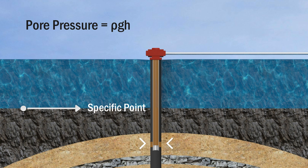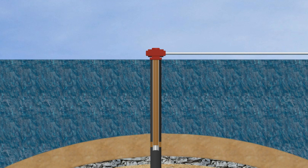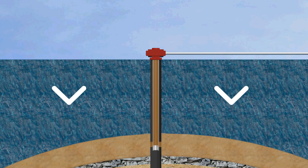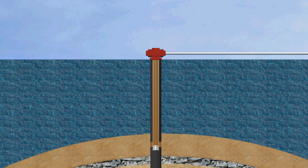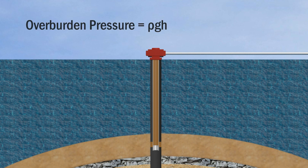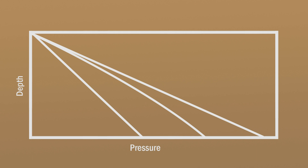Pore pressure represents the formation pressure — the actual pressure possessed by formation fluids by which they can flow upward to the surface. Overburden pressure is the pressure caused by both sediments (rock grains) and the column of formation fluid within their pores. Formation pressure may reach overburden pressure in abnormal cases, such as when sediments are still unconsolidated and cannot support their own weight. Overburden pressure equals ρgh, where ρ is the bulk density of both rock matrix and contained fluid. A normal overburden gradient equals 1 psi per foot, and abnormal formation pressures usually exist between normal pore pressure and overburden pressure.